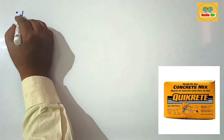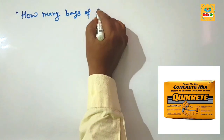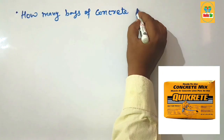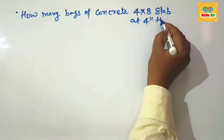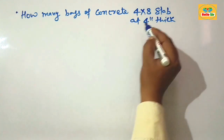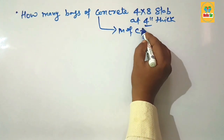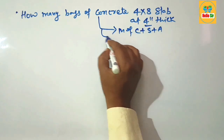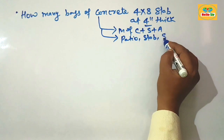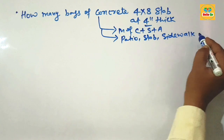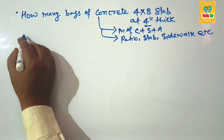In this video we calculate how many bags of concrete are needed for a 4 by 8 slab at 4 inches thick. The thickness of the slab is 4 inches. Concrete is a mixture of Portland cement, sand, and aggregate, required for casting different structures like patio slabs, sidewalks, driveways, ramps, and more.